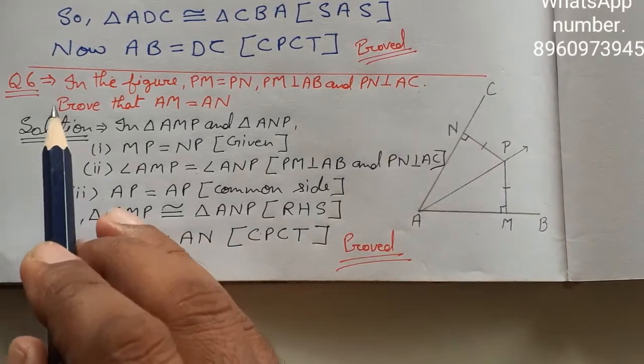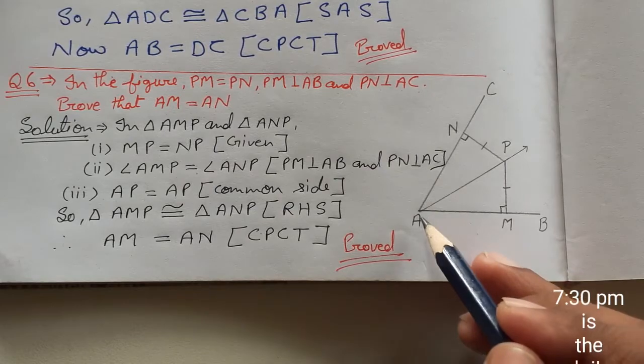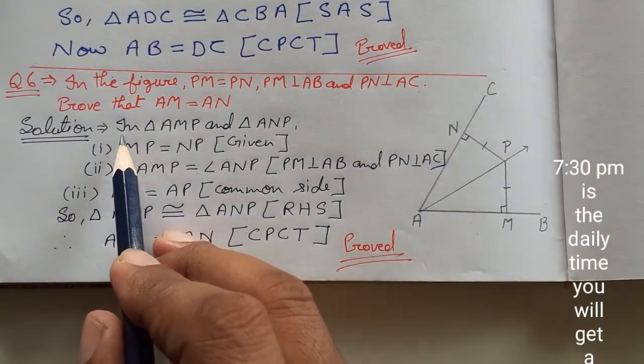You have to prove that AM is equal to AN. Now let's start the solution.